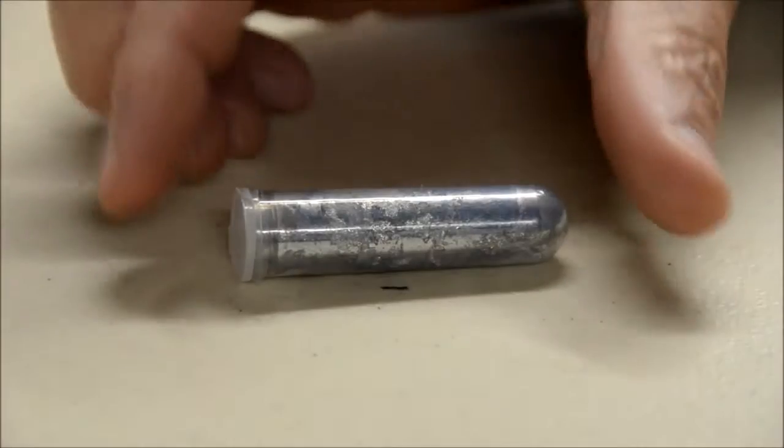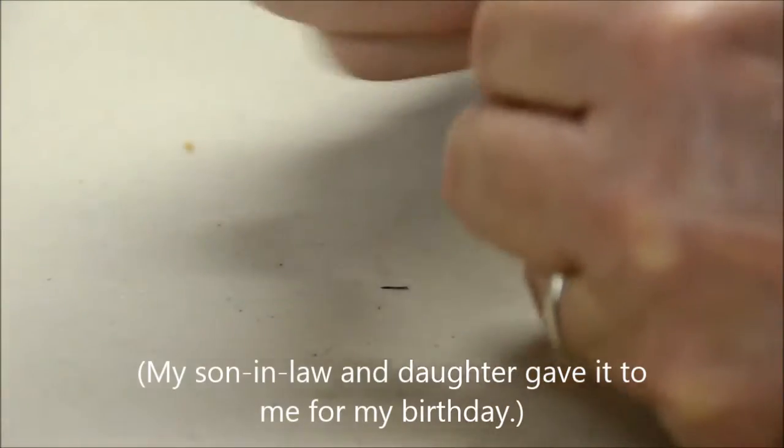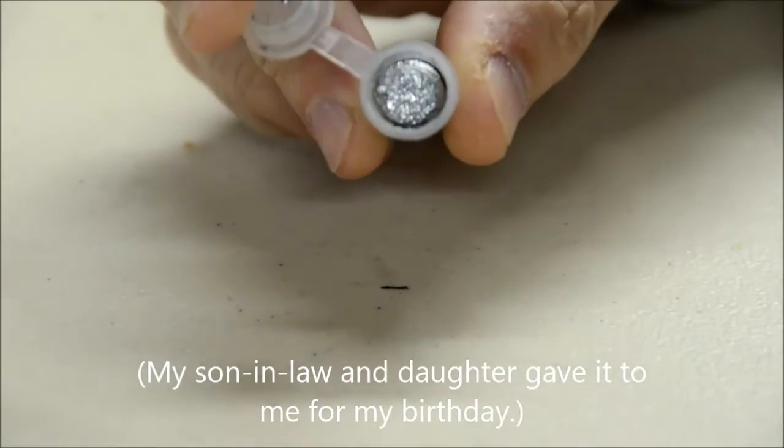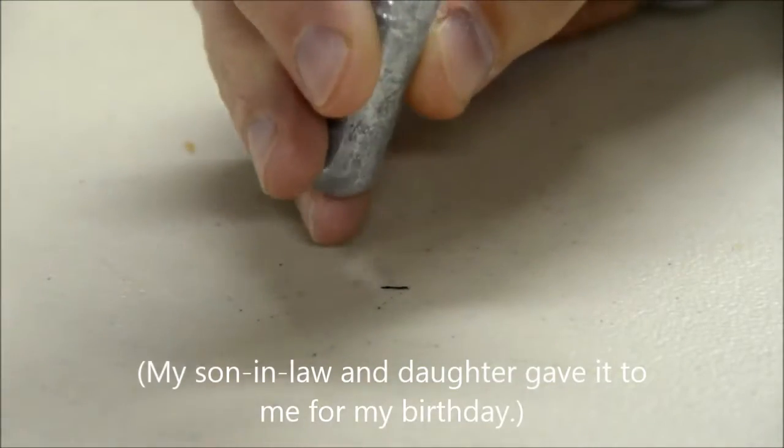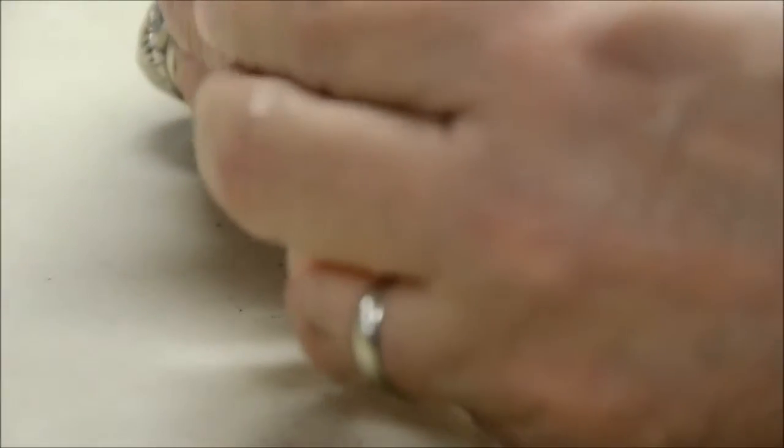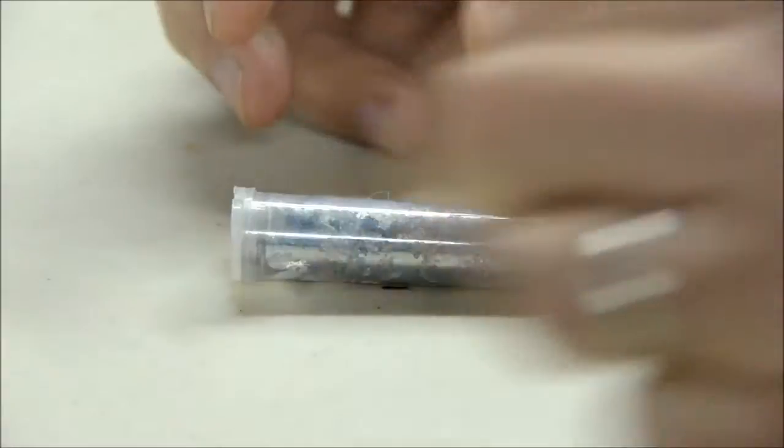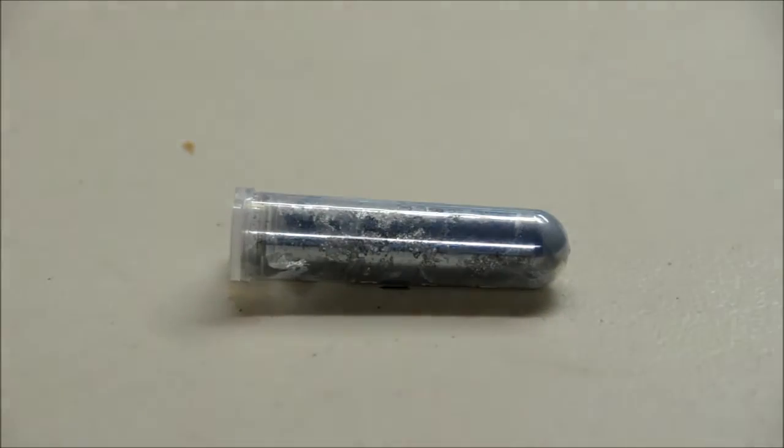Now here's a tube full of gallium metal. You can see in there it's just a chunk of metal. It's a solid below about 85 degrees Fahrenheit and it melts above that, so I'm going to heat it up and show you what it looks like.